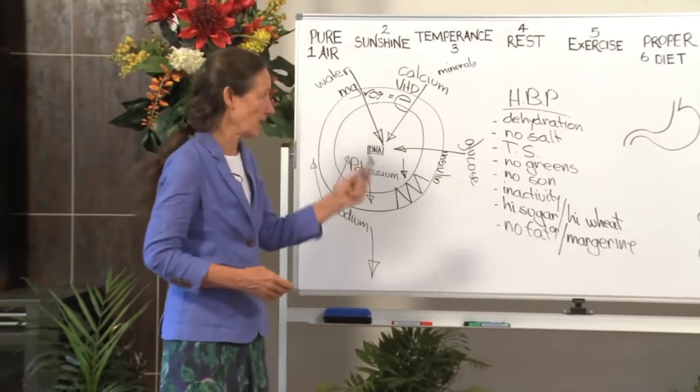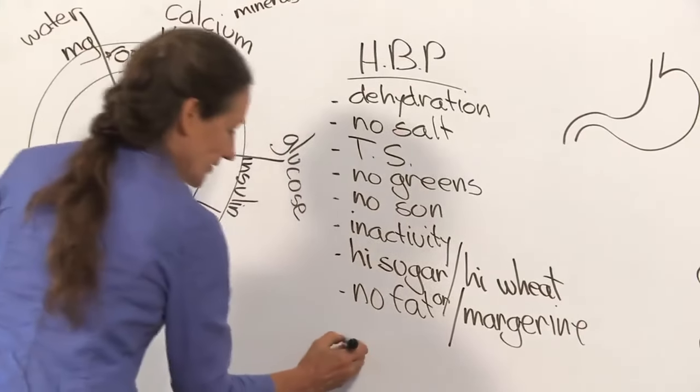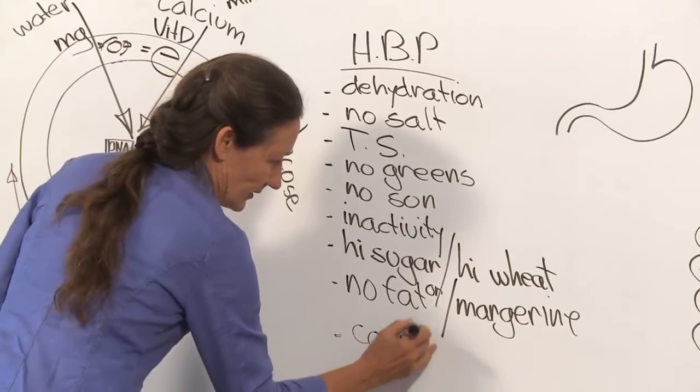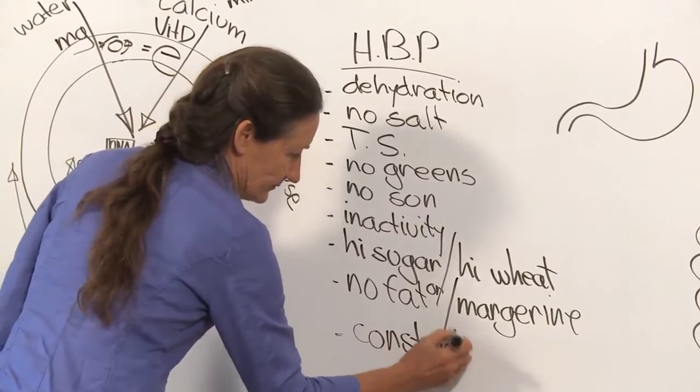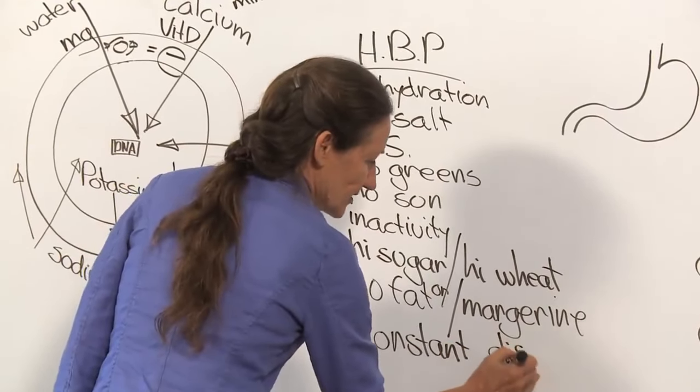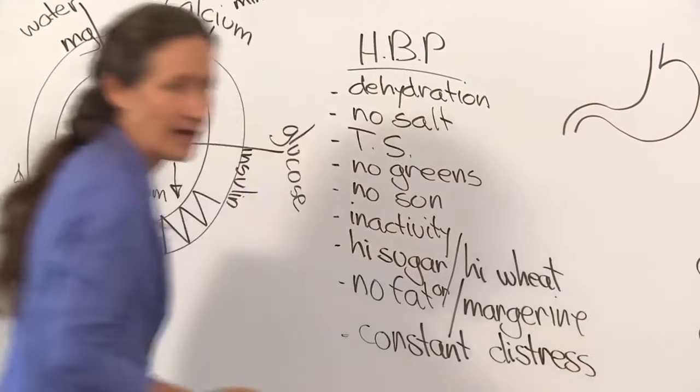You see, there's more to high blood pressure than meets the eye. High blood pressure can be caused by constant distress. I don't say stress because everyone has a bit of stress in their life and one man said to me, I love stress. It keeps me working hard.